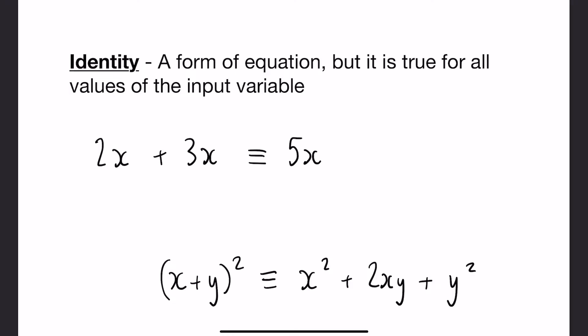Identities, signified by triple equals sign, no matter what value you input into this it will always be true. So by definition it's a form of equation but it is true for all values of the input variable.